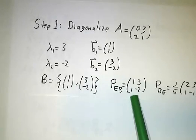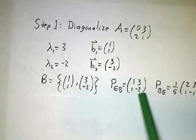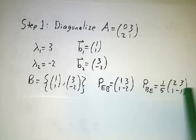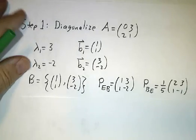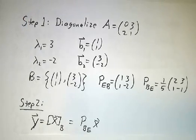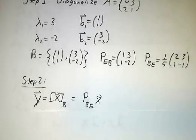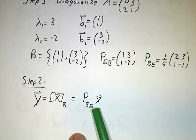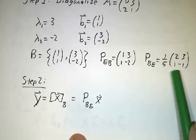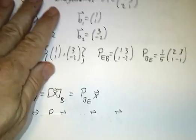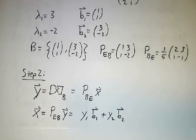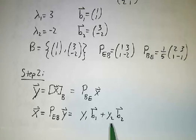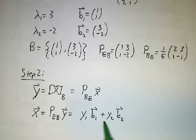One of our change of basis matrices is [1, 3; 1, -2], and this is the inverse of that matrix. The next step is we write y as the coordinates of x in the B basis. We go from x to y by multiplying by P_BE — that's this matrix. At any given time, x can be gotten by the opposite matrix, and y1 and y2 are the coefficients when you expand x in the B basis. So x equals y1 times b1 plus y2 times b2.